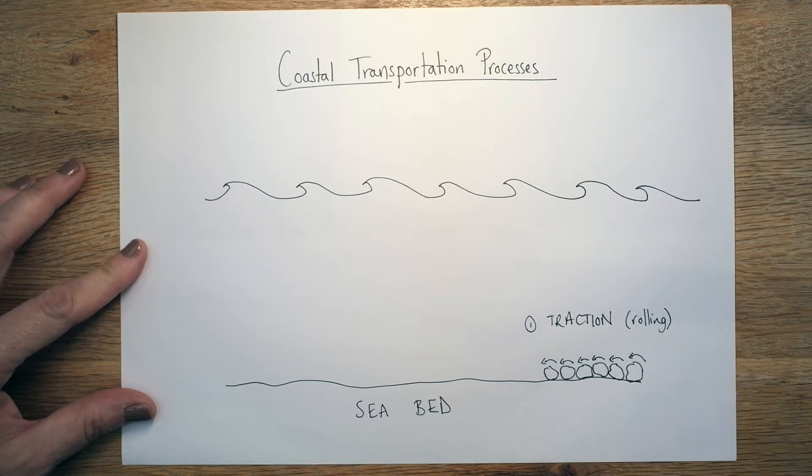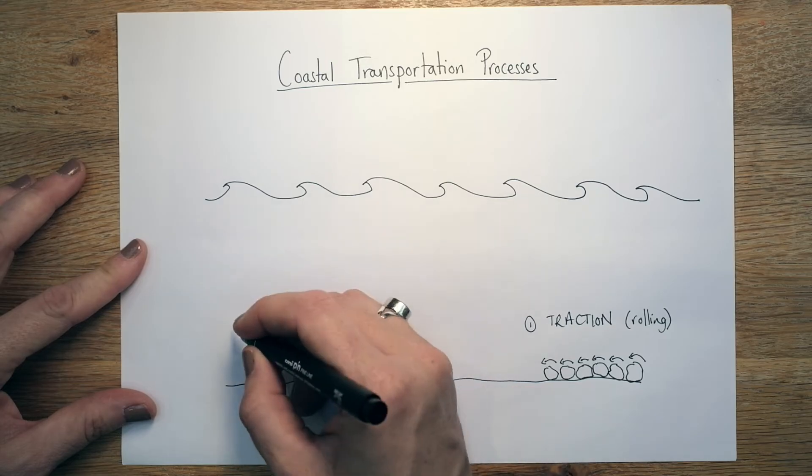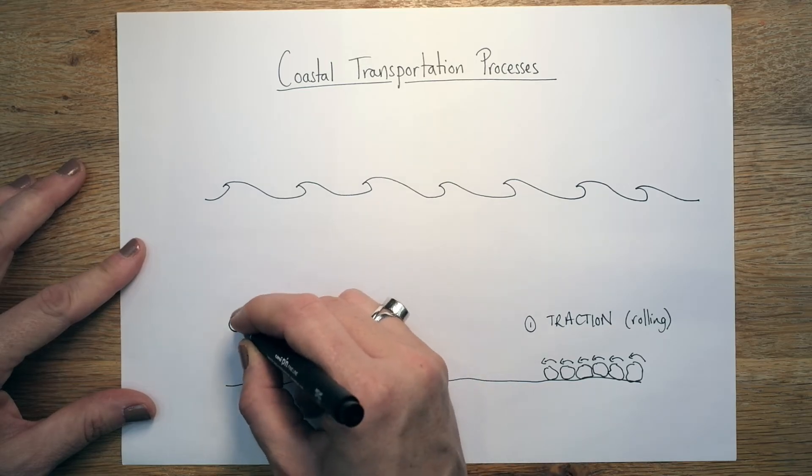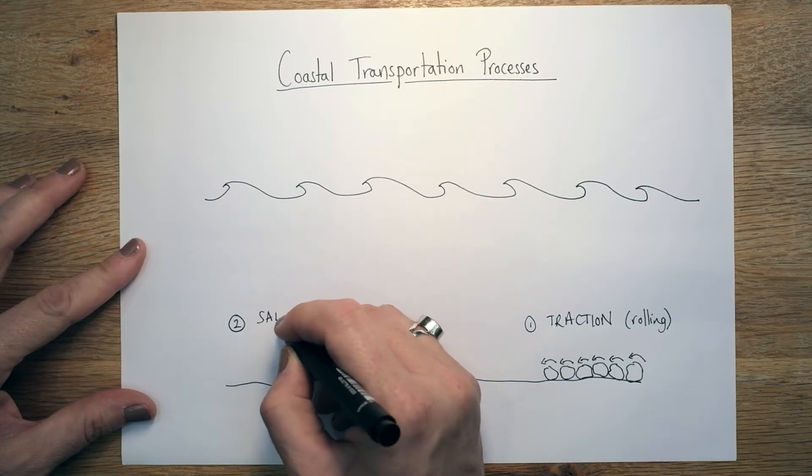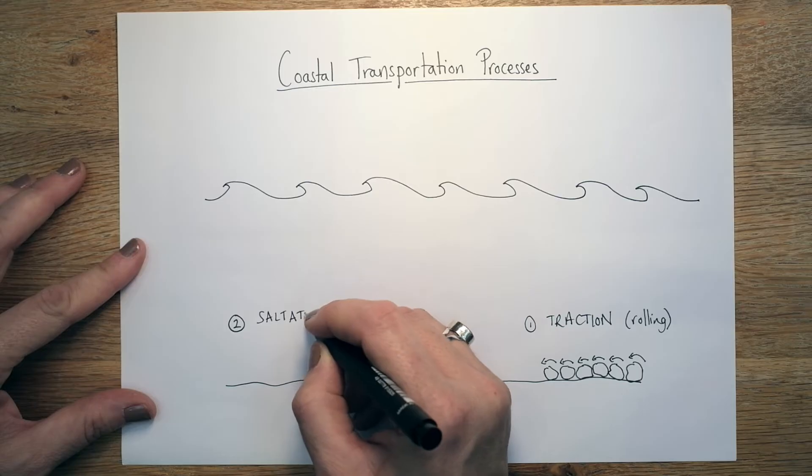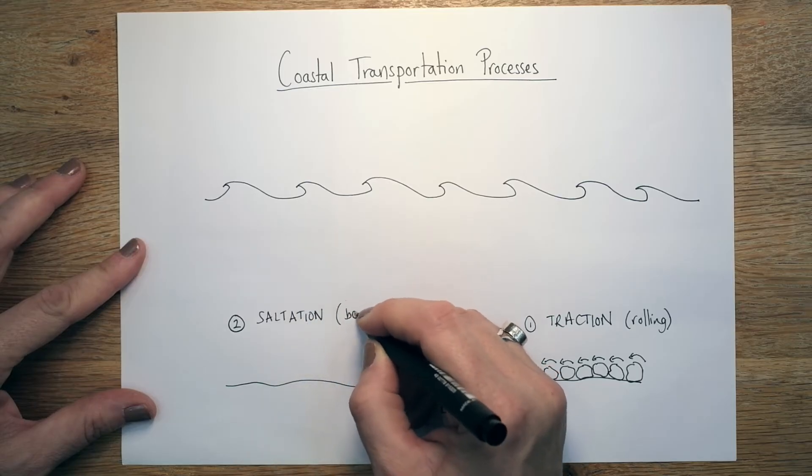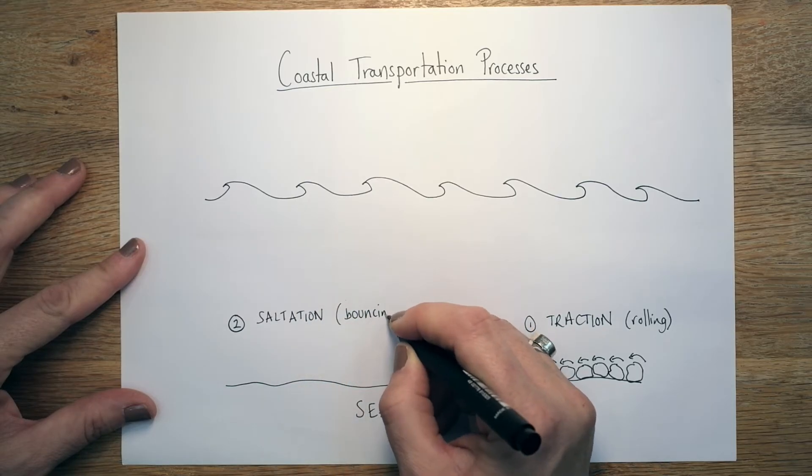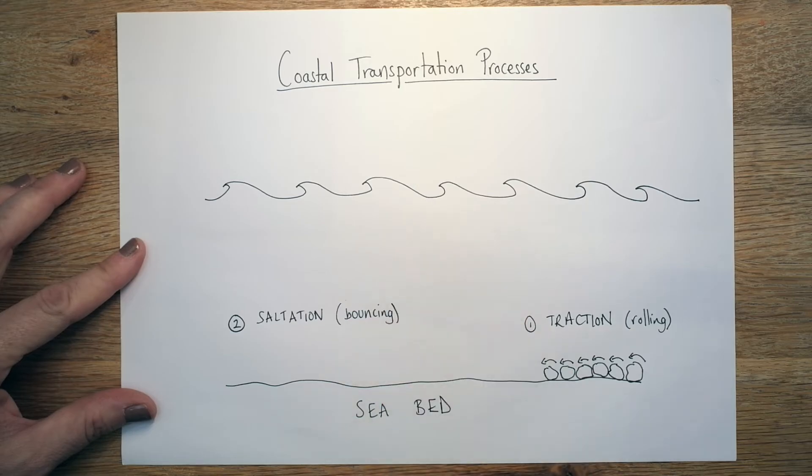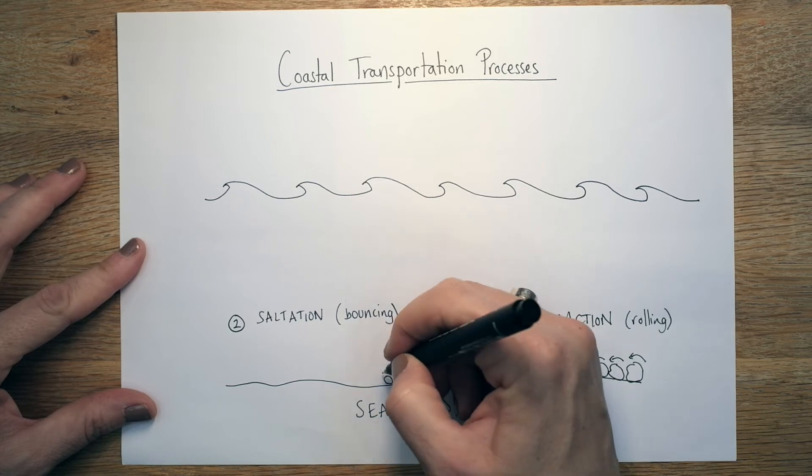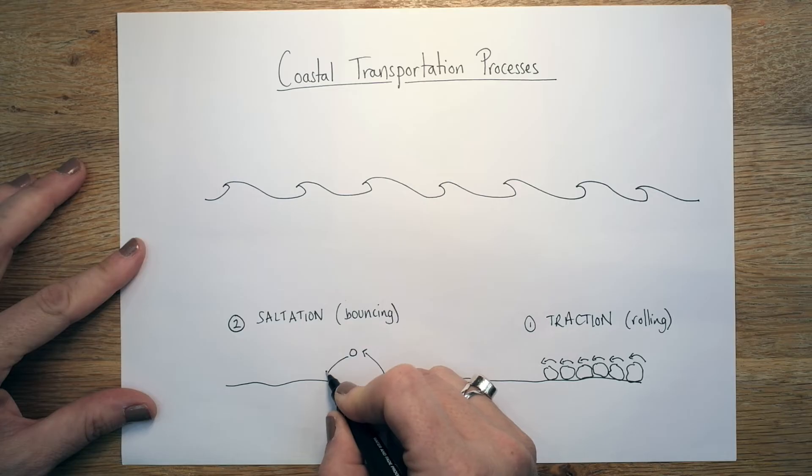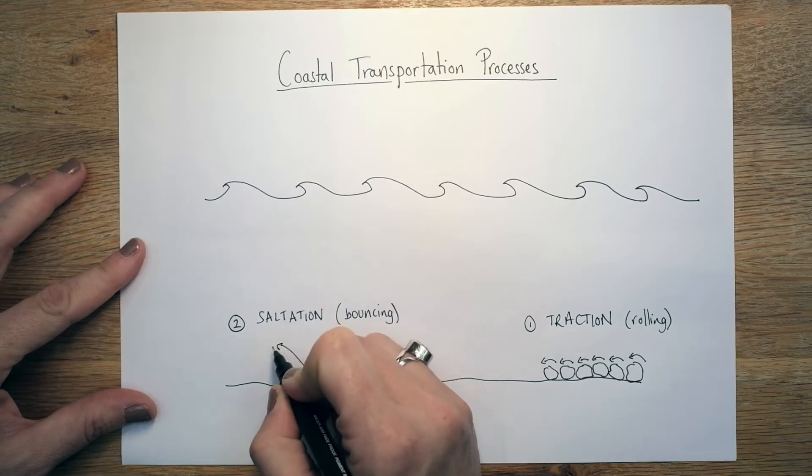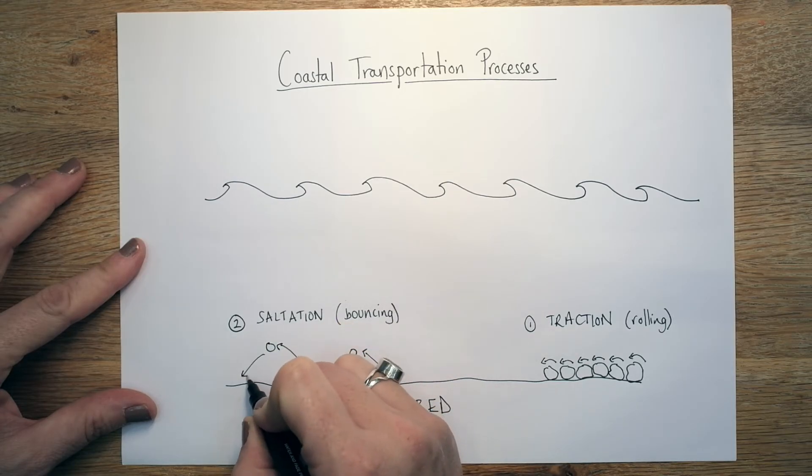Now when these particles get a little bit smaller, I'm just going to put number two over here, they start bouncing, which we call saltation. So if we just write saltation and in brackets, I want you to remember the movement is a kind of bouncing movement. So we'll draw them just a little bit smaller and they kind of bounce up and then fall back down again, and then they bounce up and fall back down and so on.